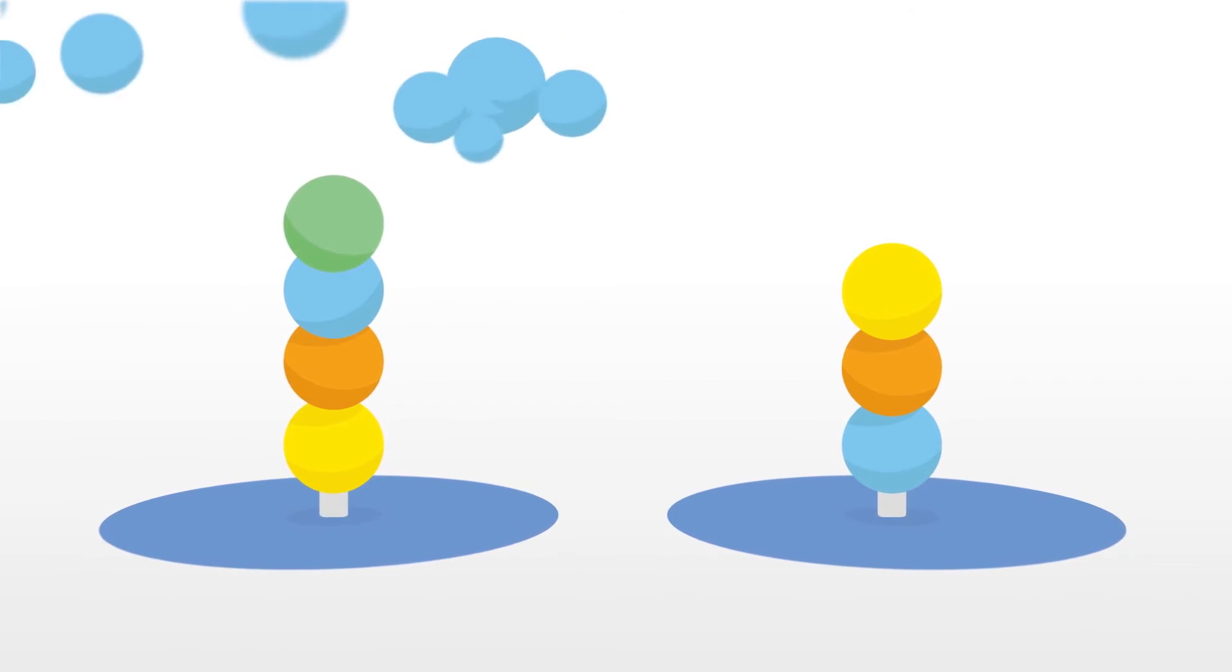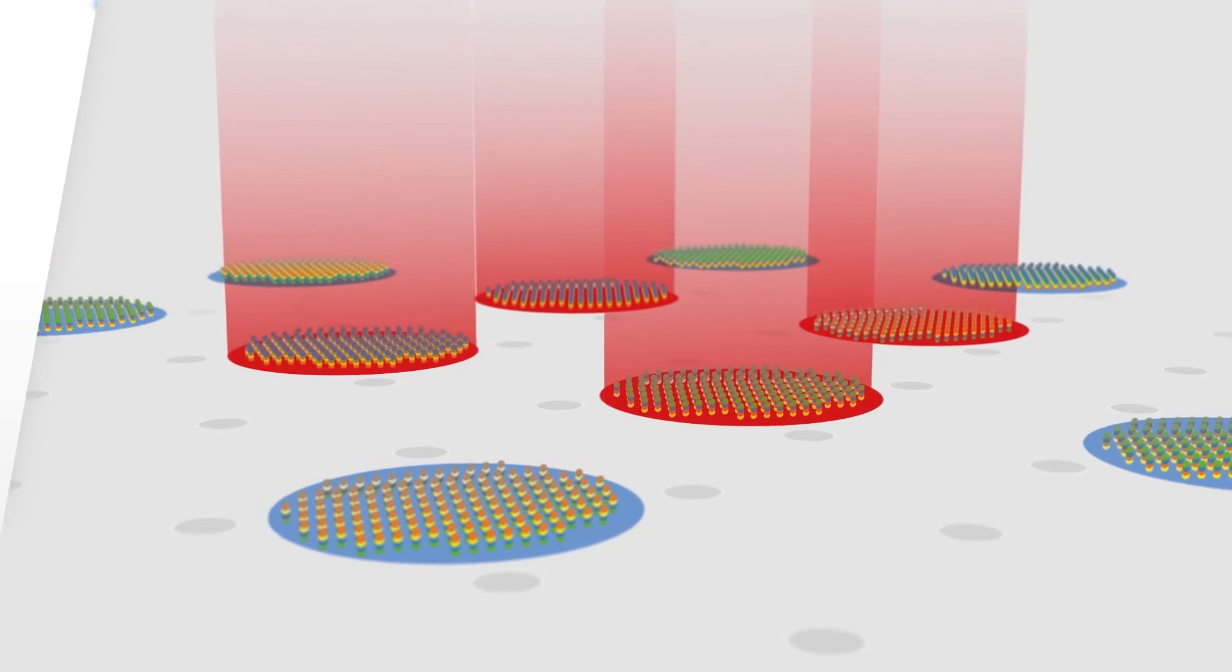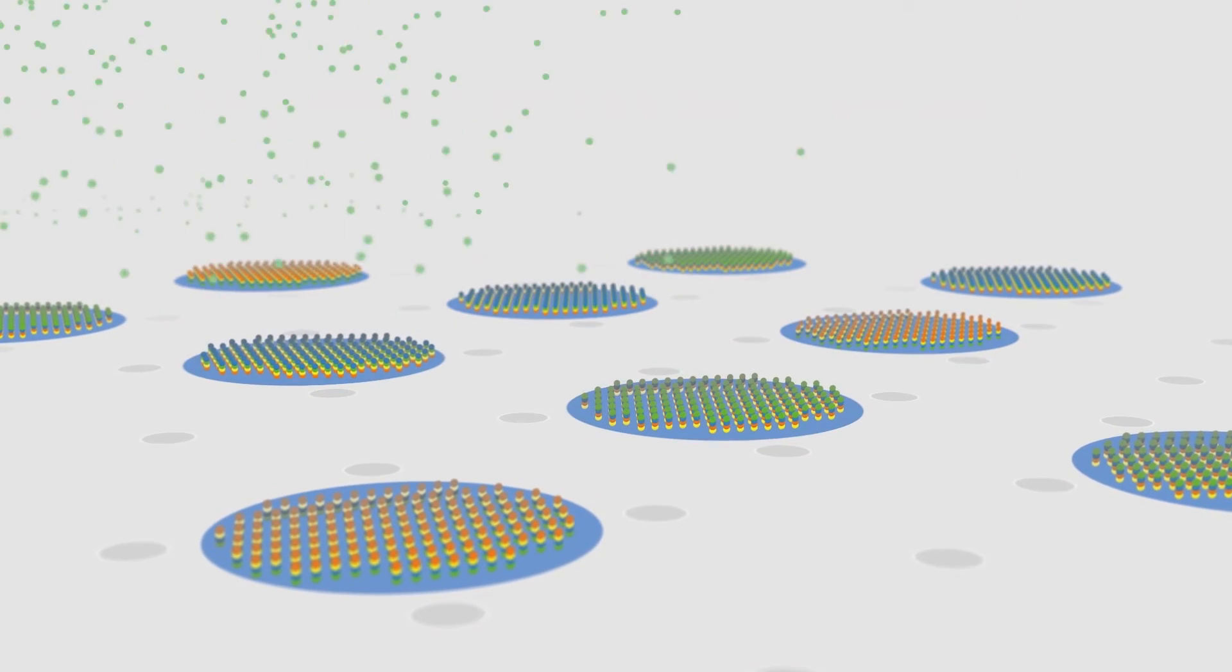The cycle of heating and extension is repeated until many thousands of different molecules are synthesized in parallel on the chip.